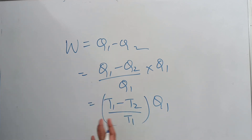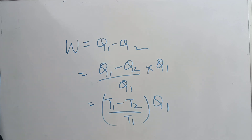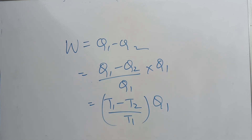We assume that a time will come when the temperature difference tends to zero. The energy available for useful work is Q1 minus Q2, where Q1 is absorbed at temperature T1 and Q2 is rejected. This concludes our discussion on change in entropy in reversible and irreversible cycles and the concept of available energy.